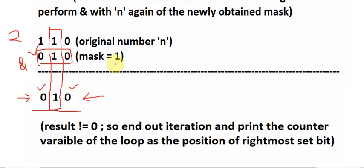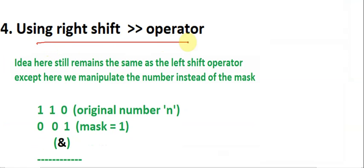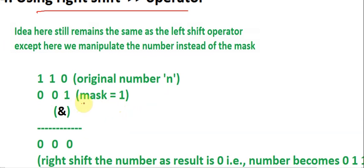The fourth method uses the right shift operator. The idea is similar to the third method, except instead of shifting the mask, we shift the original number itself. We do a right shift of the original number and perform a similar loop iteration, tracking the count, and return the number of iterations done until we obtain a non-zero result of the AND operation between the number and the mask.